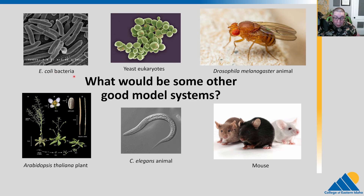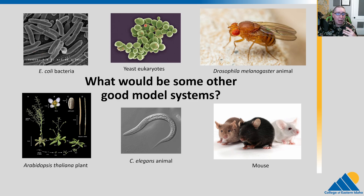Yeast is a single-celled eukaryote that a lot of early genetics was done on, and it goes through a sexual reproductive cycle — something E. coli can't do. So yeast has the same benefits: small, you can get a lot of them, they reproduce quickly. But it's a eukaryote, so we can see how eukaryotic genetics work.